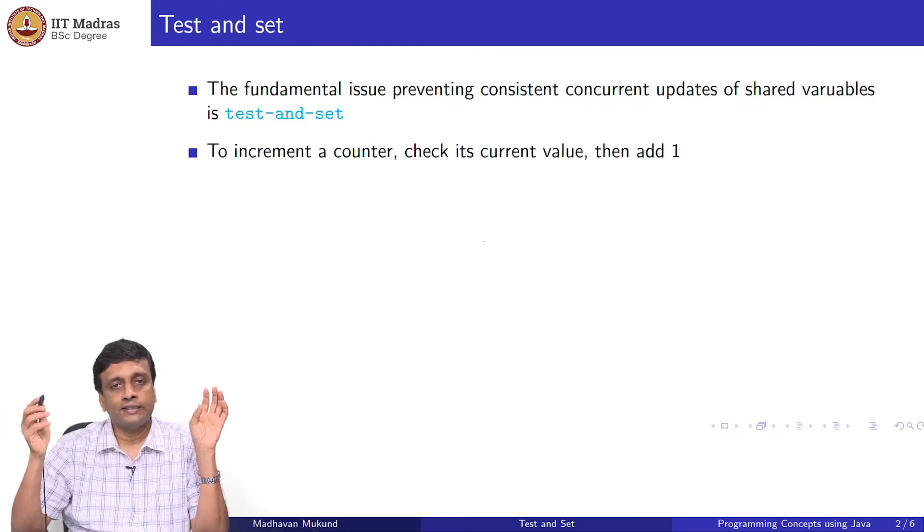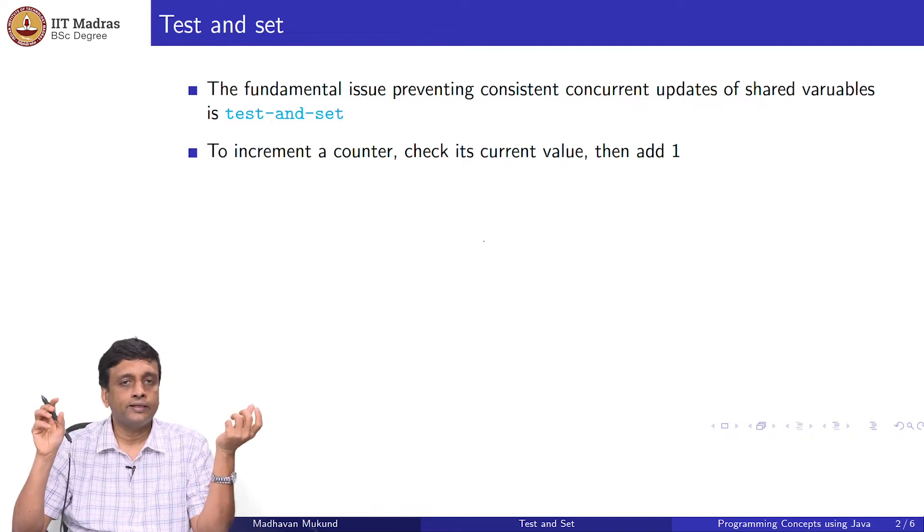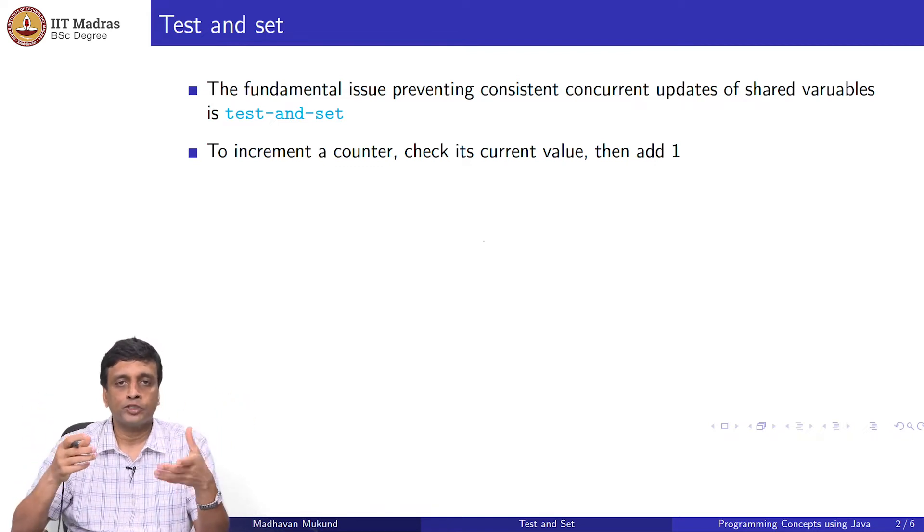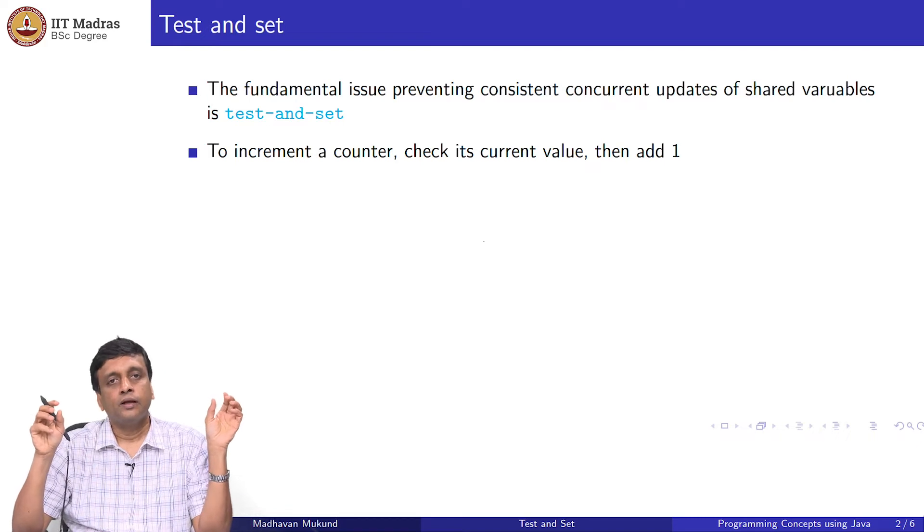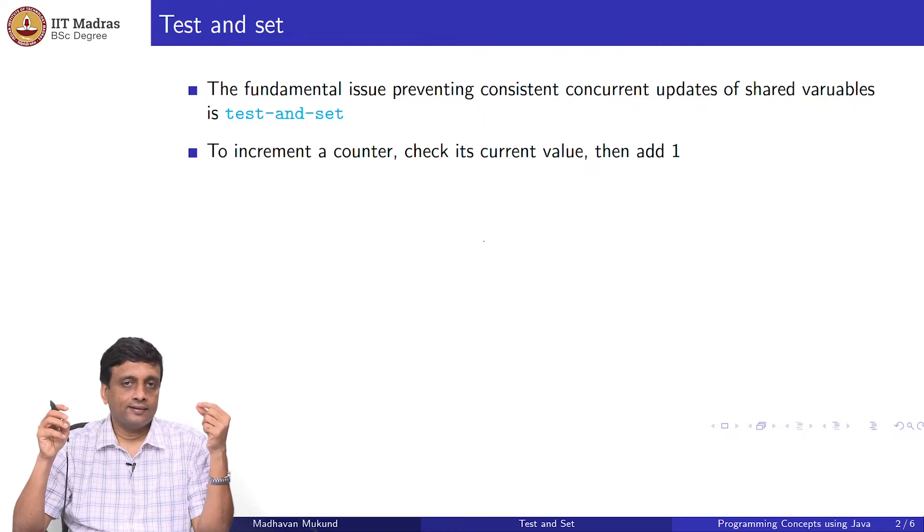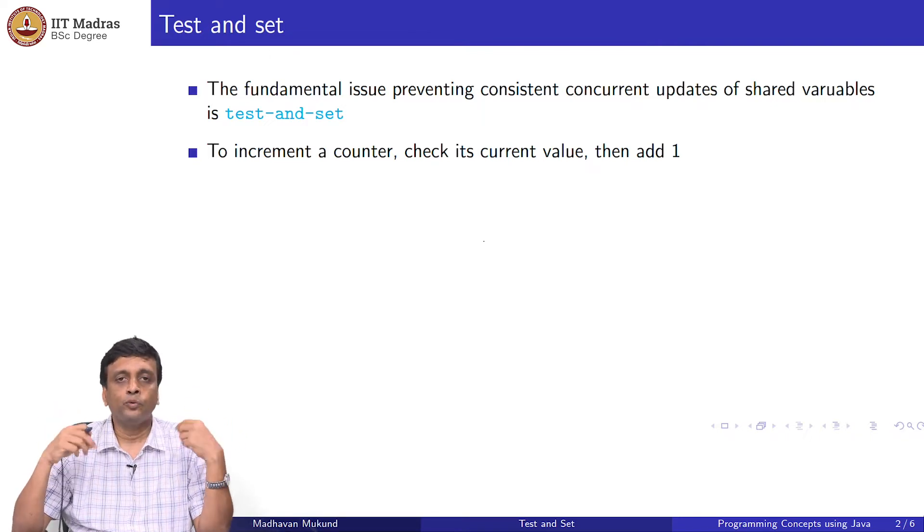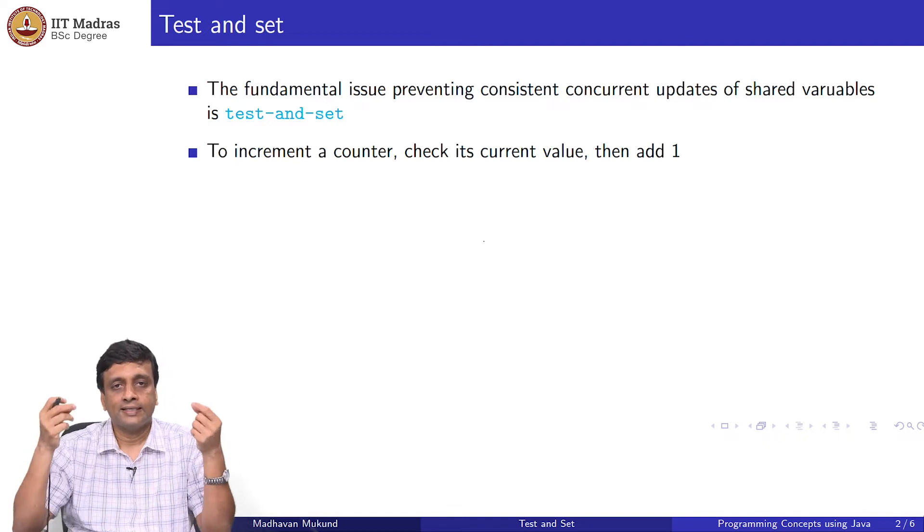We looked at this very simple example where two threads were trying to increment an integer. We think of it as a counter or Lamport's bakery example. What we are really doing in that case is testing in the sense that we are checking what is the current value of the integer, then we are computing n plus 1 and storing it back. That is set.